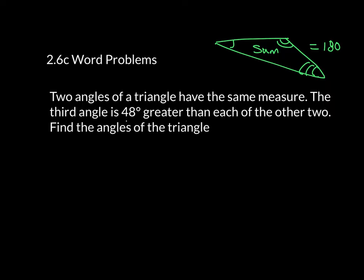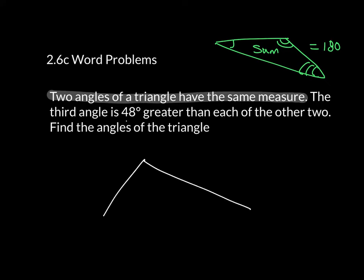We're going to break this up into a couple of different pieces. The first statement is a fact: two angles of a triangle have the same measure. Whenever I start these, I like to go ahead and draw a picture. Whenever they say two angles have the same measure, I'm going to label both of those angles in the triangle X. The second statement says that the third angle is 48 greater than each of the other two.